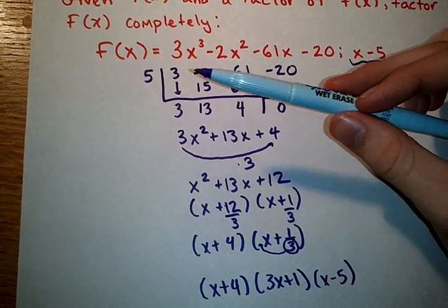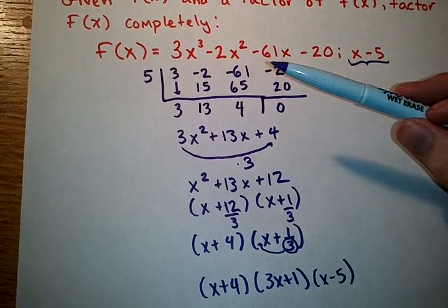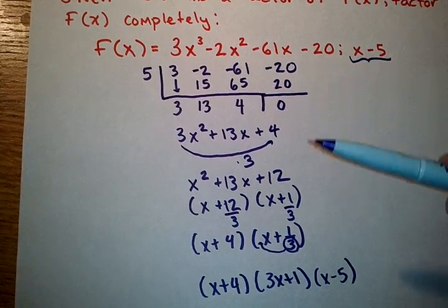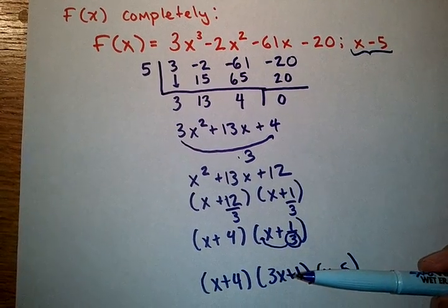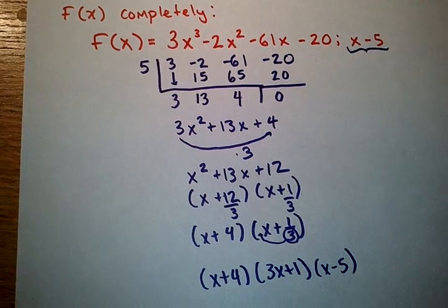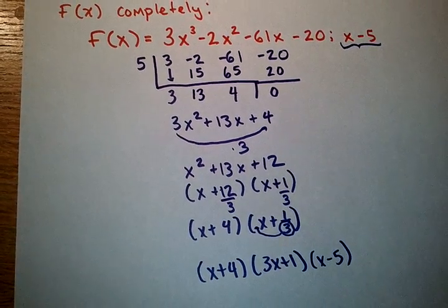So what are the factors of 3x cubed minus 2x squared minus 61x minus 20? x plus 4, 3x plus 1, and x minus 5. Hope this helps.